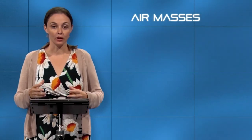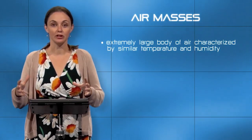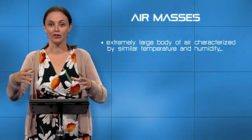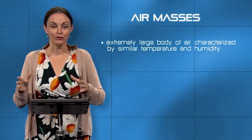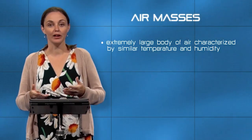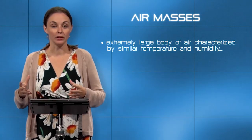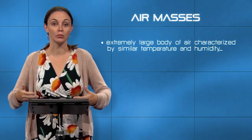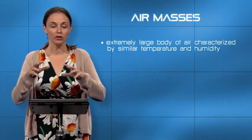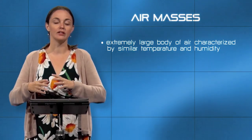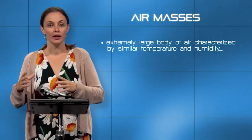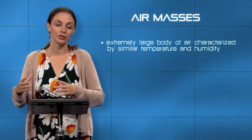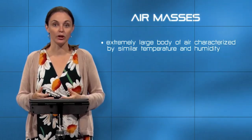Before we get into any of that, we first have to define what an air mass is. An air mass is a large body of air characterized by similar conditions. Over the entire interior of the United States you might have cool and dry air; over the Gulf of Mexico year-round you have warmer, moist conditions. These regions — the Gulf of Mexico, the interior of the US, the North Atlantic — are the controlling factor in the air mass characteristics, which boil down to temperature and humidity.